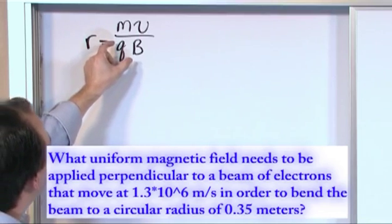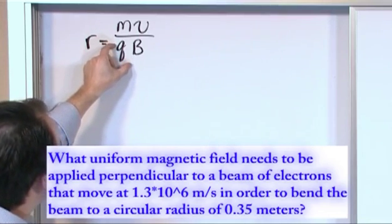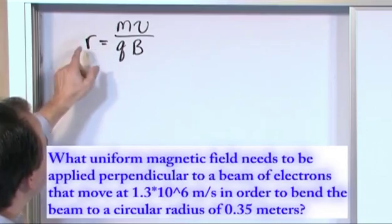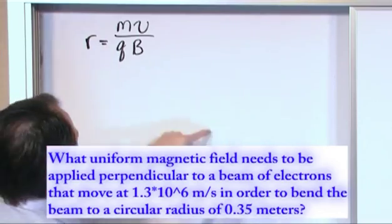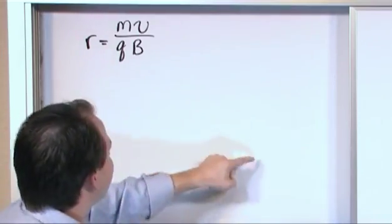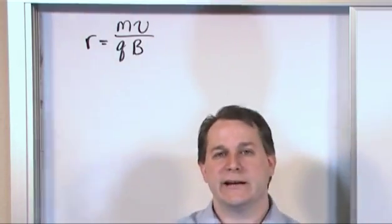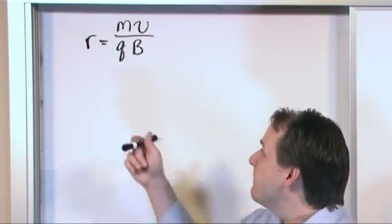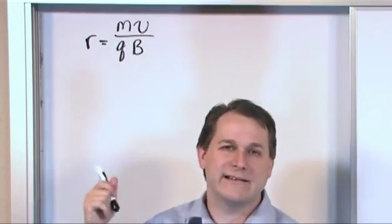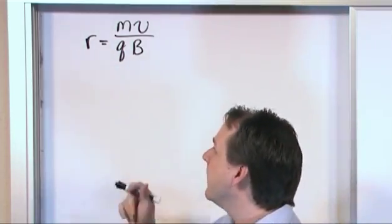So you're only dealing with the absolute value of the charge because you only care about the radius. You don't even care which way the thing is orbiting. Charged particles that are positive are going to orbit a different direction than those that are negative, but the magnitude of this charge is the only thing that's going to tell you the size of that orbit.